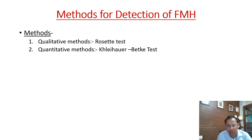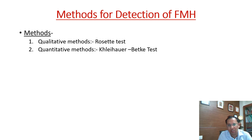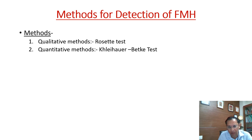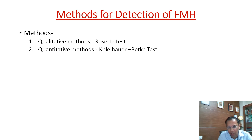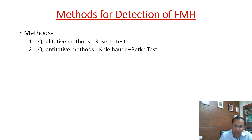The methods for detection of FMH include qualitative and quantitative methods. For qualitative methods, we do the rosette test — this tells you whether it is positive or negative. Positive means FMH is present; negative means no FMH and you don't need to proceed to the KB test. However, whether the rosette test is positive or negative, you still have to give one full vial of RhIg — 300 micrograms — irrespective of the result. Once positive, you move to the KB test.